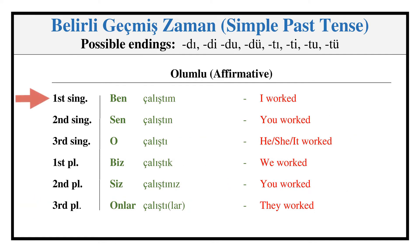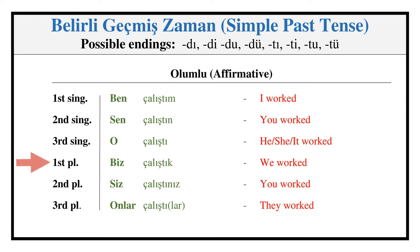Simple Past (Direct) — Affirmative: ÇALIŞTIM, ÇALIŞTIN, ÇALIŞTI, ÇALIŞTIK, ÇALIŞTINIZ, ÇALIŞTILAR.